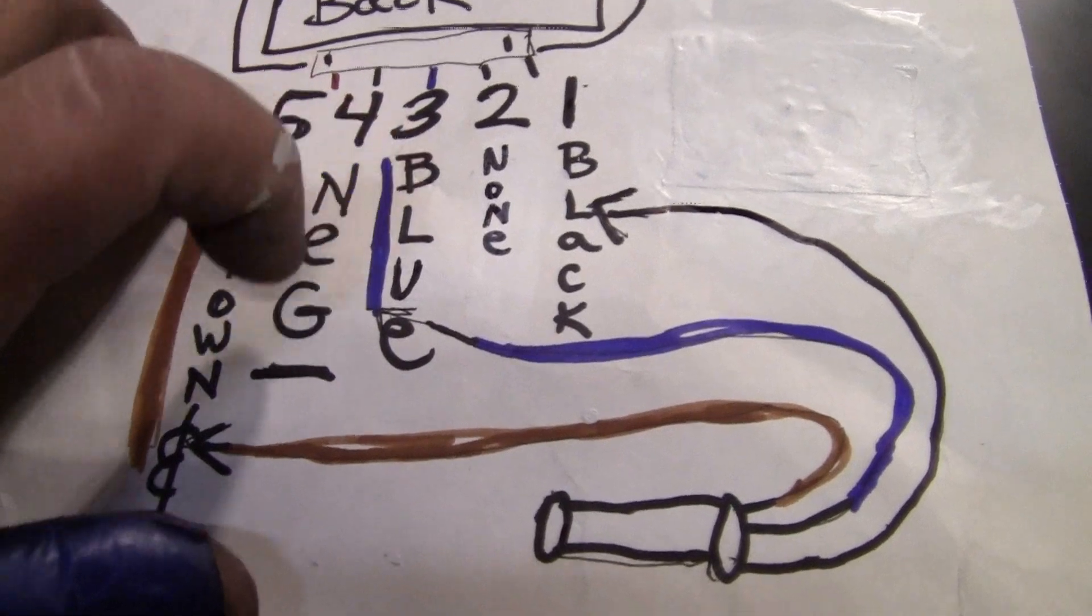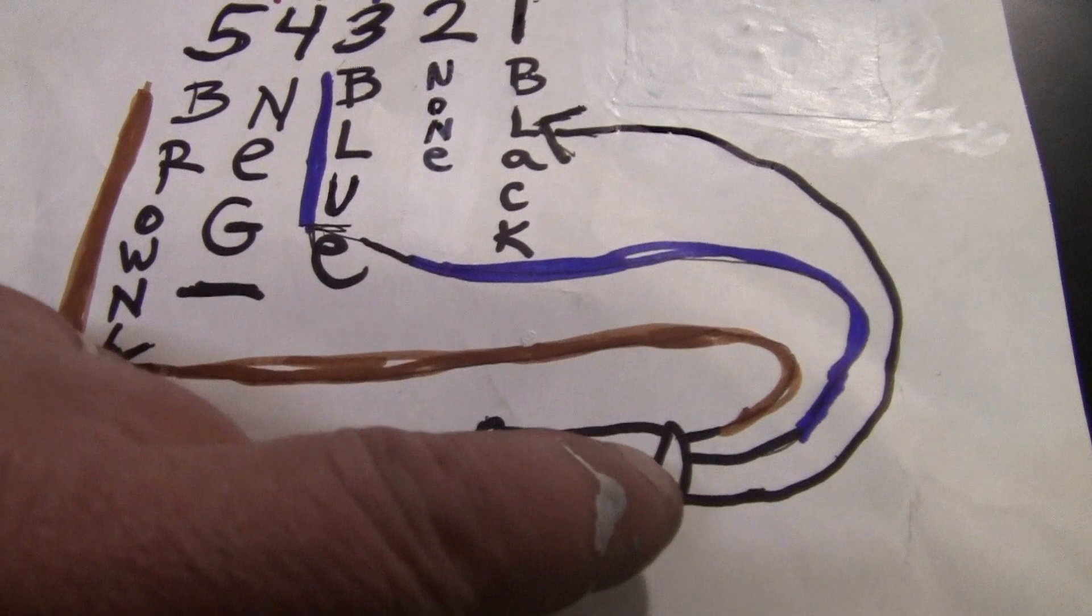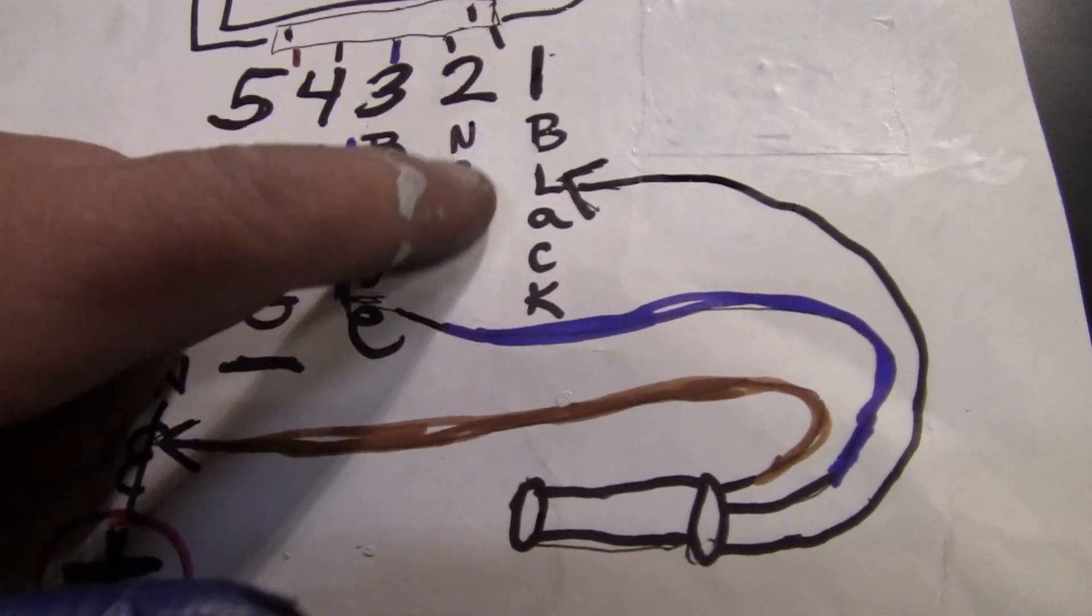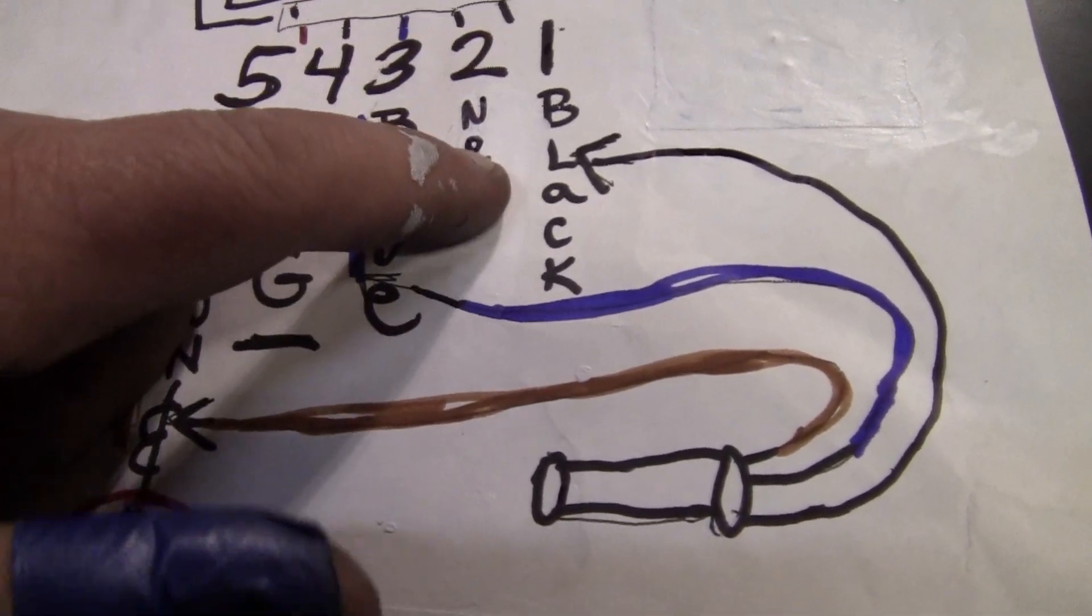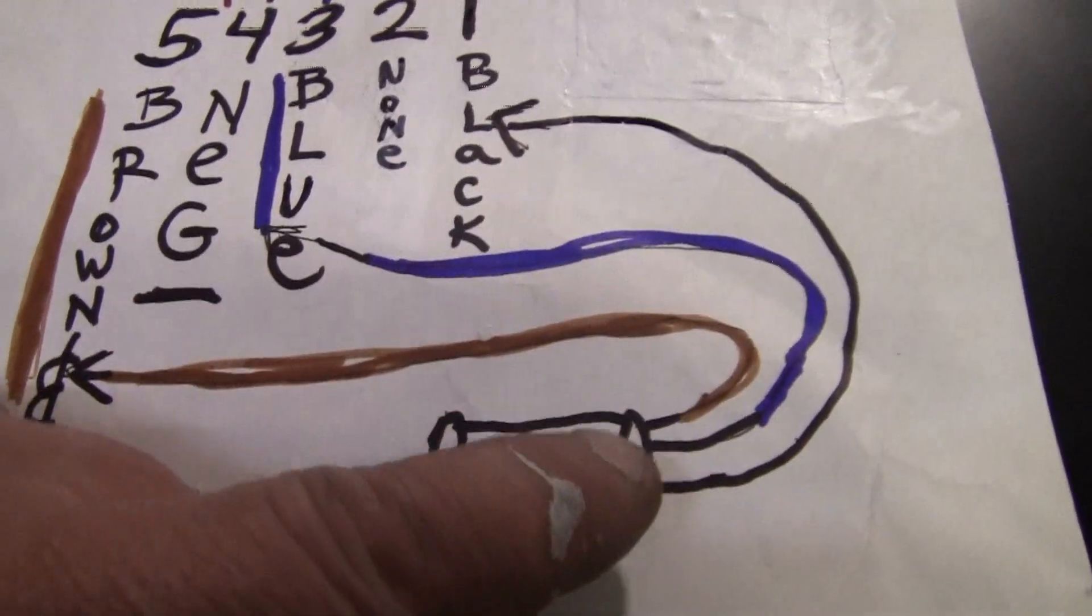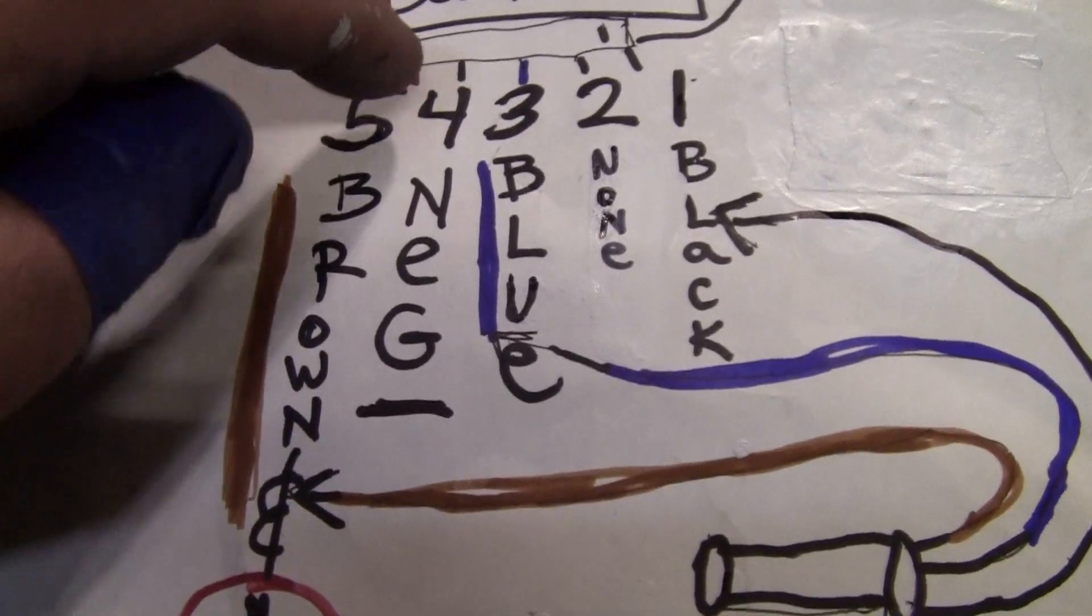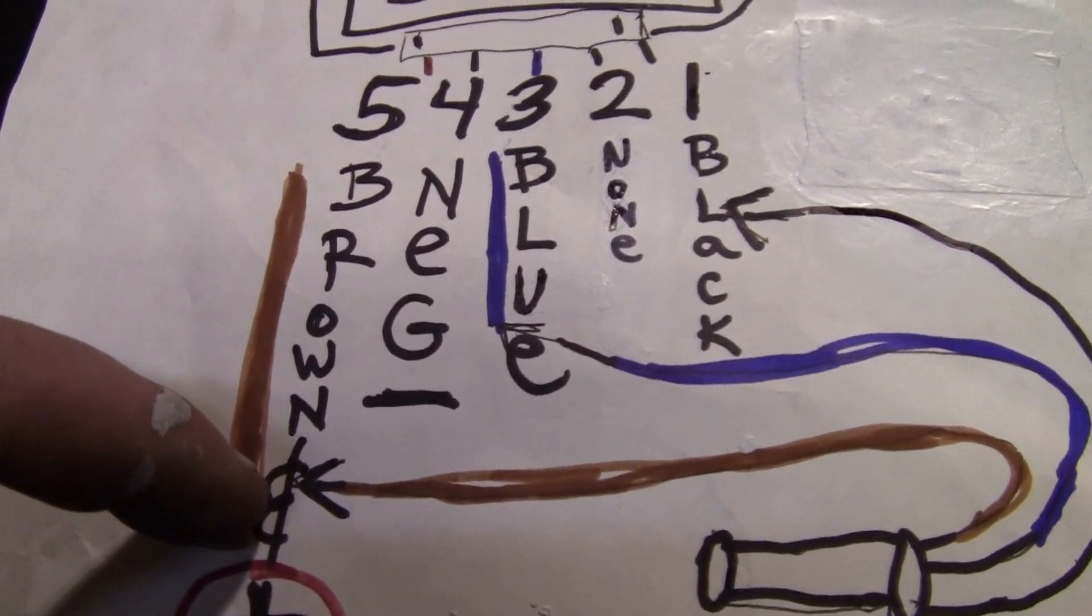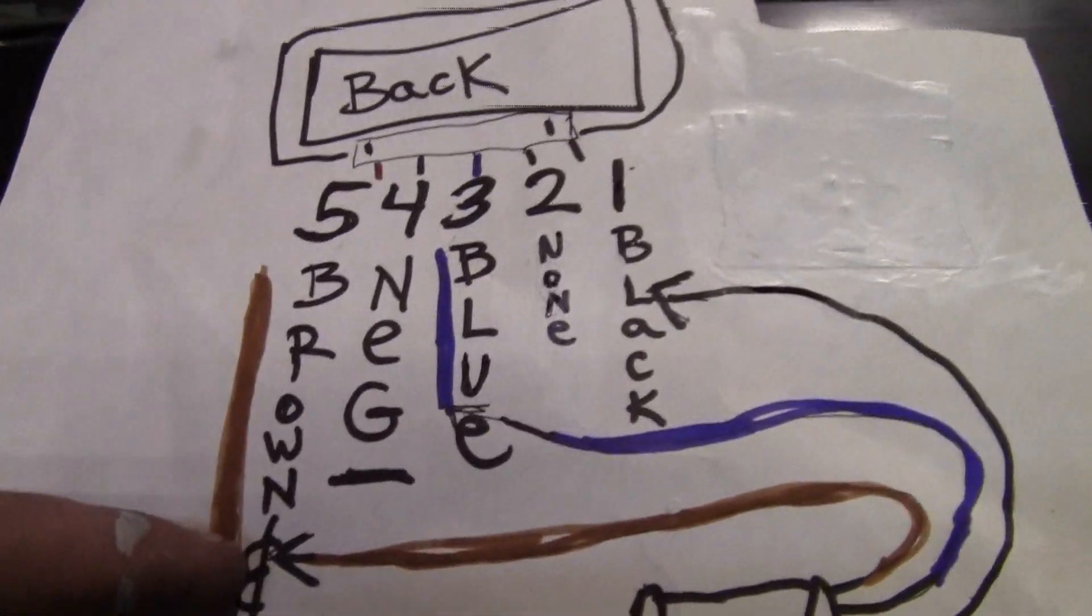Three is blue to your sensor - you don't need it. One is black to your sensor. Now four is your negative wire, five is your positive wire.